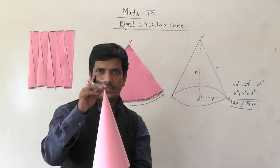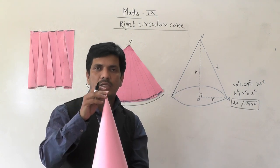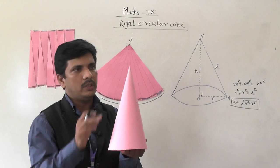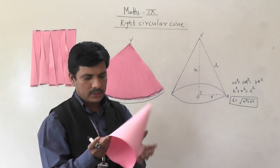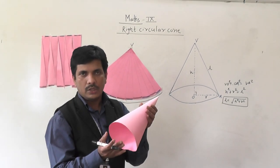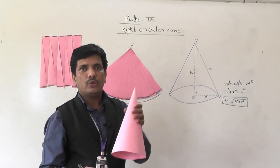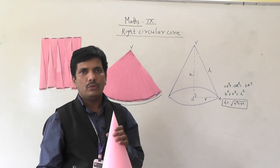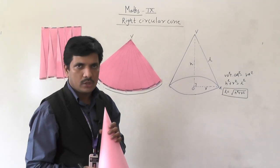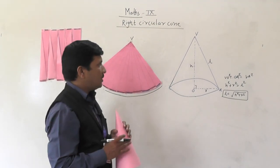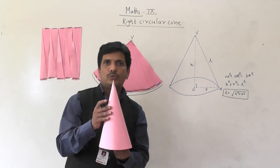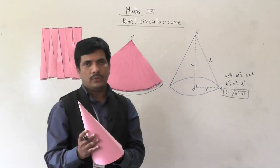This is the vertex. You will get only one vertex, and that will be on the top. This is one vertex; base is circular. So now we are going to think about its curved surface area and total surface area. For curved surface area, we are going to do one activity.